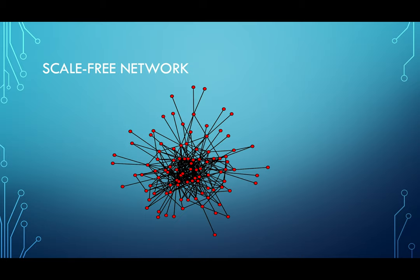Two more heterogeneous network structures have nodes with very different numbers of links depending on their role in the network. One is the scale-free network, built by starting from a couple of nodes. Whenever a new node comes in, there is a higher probability for it to be connected with nodes that already have many neighbors, and a lower probability to connect with nodes with fewer neighbors. As this network grows, stronger nodes become stronger and weaker nodes become weaker. Therefore, there will be some hub nodes or center nodes that have more links than other nodes.